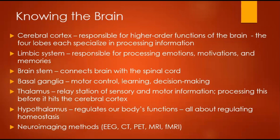Knowing the brain is important. Be familiar with the cerebral cortex, the limbic system, the brainstem, the basal ganglia, the thalamus, and the hypothalamus. Also know the neuroimaging methods: CT uses X-ray images and is good for brain injuries; PET scans show brain activity for tasks and functions; MRI is good for structure with clear detailed images; and fMRI measures blood flow changes linked to brain activity, showing both structure and function.